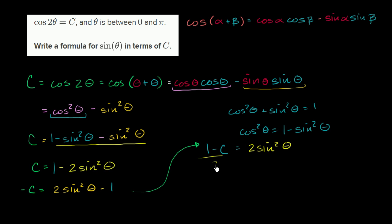I could divide both sides by 2. And then I get sine squared theta is equal to 1 minus c over 2. Or I could write that sine of theta is equal to the plus or minus square root of 1 minus c over 2.